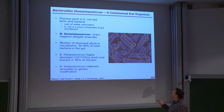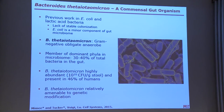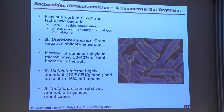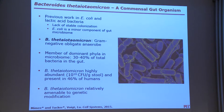One such bacterium is Bacteroides thetaiotaomicron — I'll just call it Theta. Like E. coli, Theta is a gram-negative bacterium. It's an obligate anaerobe, but it tolerates oxygen pretty well — it just doesn't grow, but at least it doesn't die. It's a member of a dominant phylum in the microbiome, accounting for about 30–40% of the total number of species in an average human gut microbiome, with up to 10^10 CFU per gram of stool. It is present in a large proportion of human microbiomes and is relatively amenable to genetic modification — not nearly as easy as E. coli, but feasible.